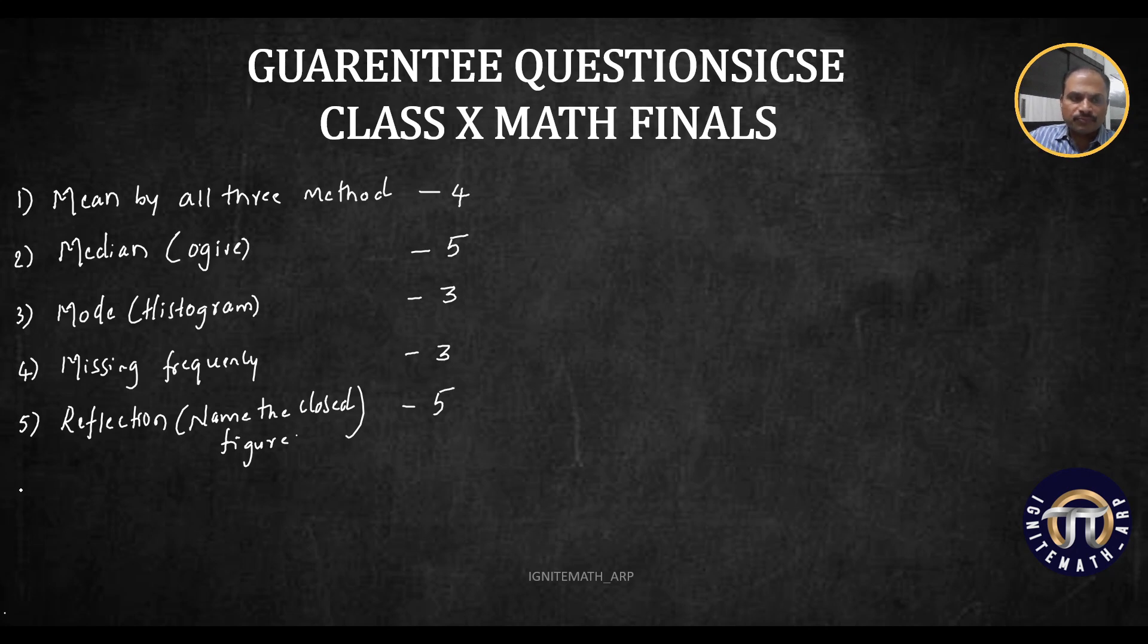Then after reflection is quadratic equation. So here, quadratic equation - finding the roots of the given quadratic equation by formula method and rounding off the final answer to given significant figures or given number of decimal places. So this is a guarantee question. It will be asked minimum for three marks, it can be asked for four marks as well.